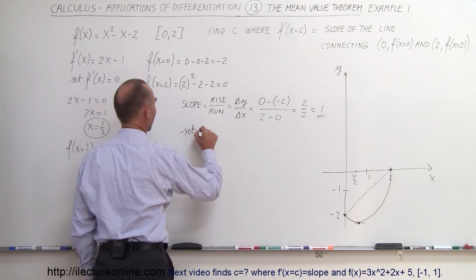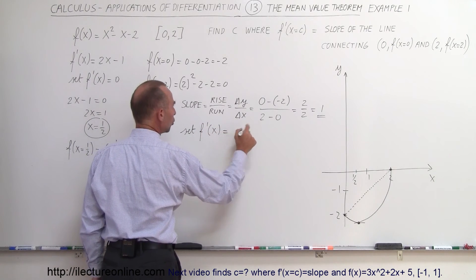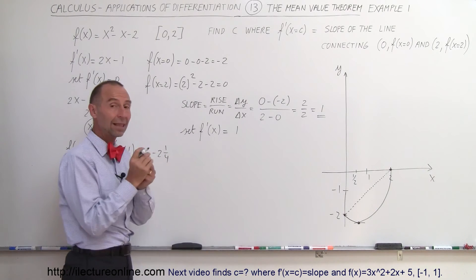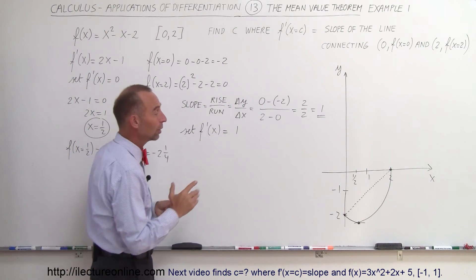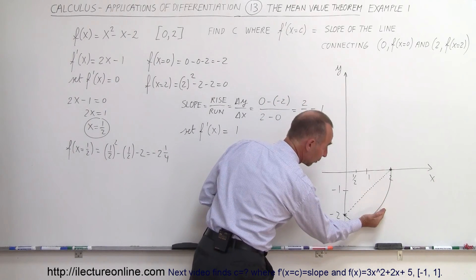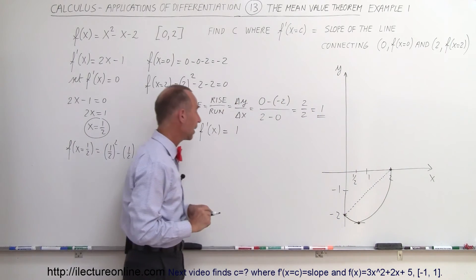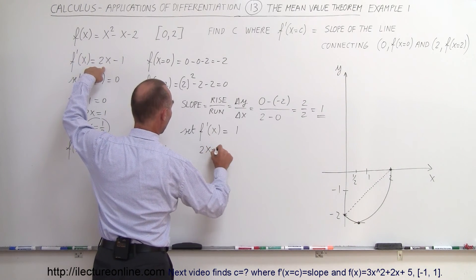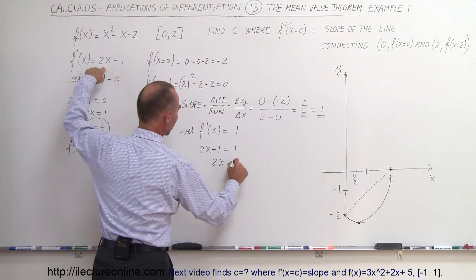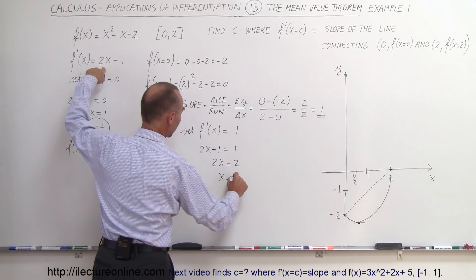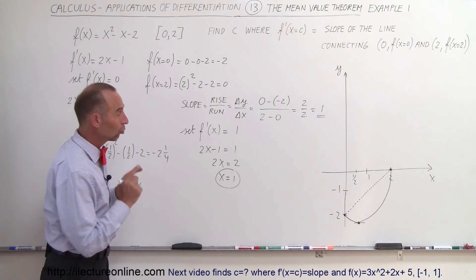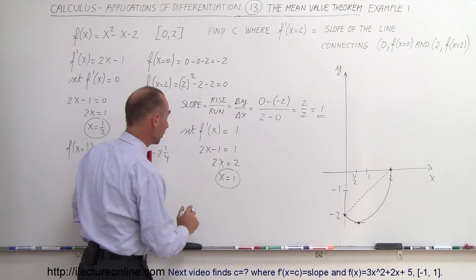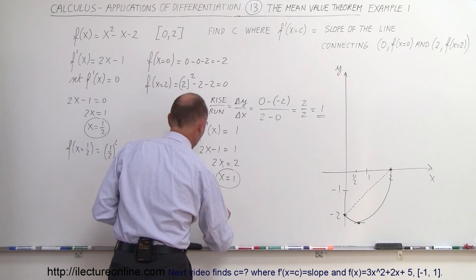Set f prime of x equal to 1 and solve for x. That will be the point where the slope of the function equals the slope of that line. The derivative is 2x minus 1, so 2x minus 1 equals 1, which means 2x equals 2, so x equals 1. When x equals 1, the slope of the function equals the slope of the line. Therefore, c equals 1.